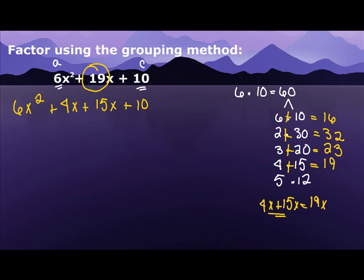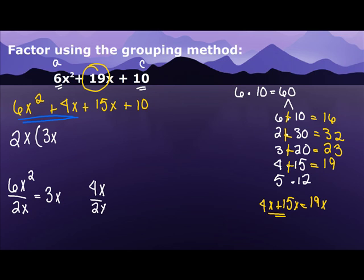Now this is where the grouping starts. I look at my first two and I say, what's in common with those two? Well, 6 and 4 are even numbers, so I know I can take out a 2. And there's an x in both of them, so I'm going to take out an x. So what happens here is, if you recall from before, we would take 6x squared divided by 2x, which gives you 3x, so that goes here. Then I'm going to take 4x divided by 2x, and that gives me a 2. 3x plus 2.